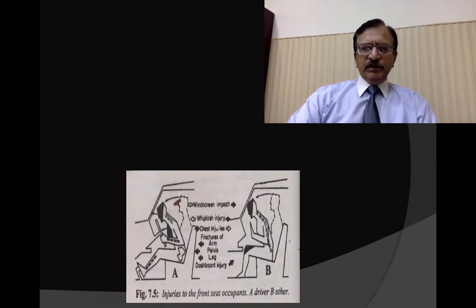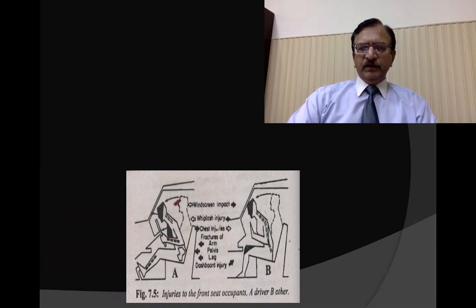A picture shows the front seat occupant. On the left is the driver, showing the steering column, steering assembly, brake panels, and accelerator panel — forces are transmitted from the arms and legs to the body. For the co-passenger, there is no steering column assembly in front, so the person strikes their head against the windscreen and knees against the dashboard, and injuries are seen there.